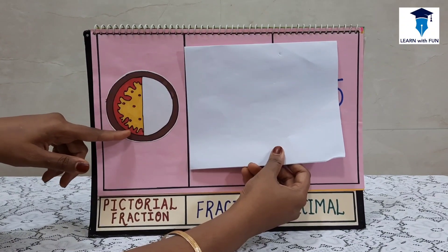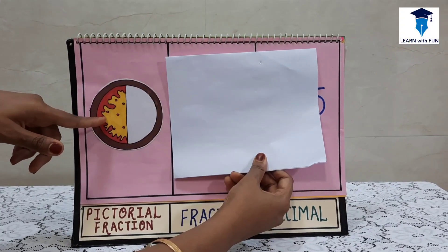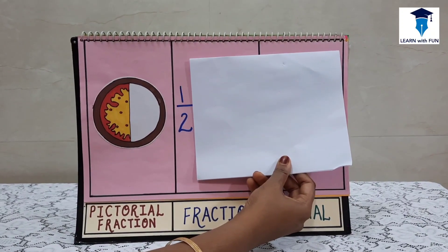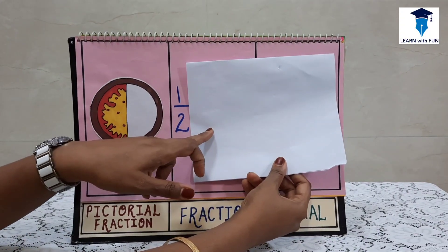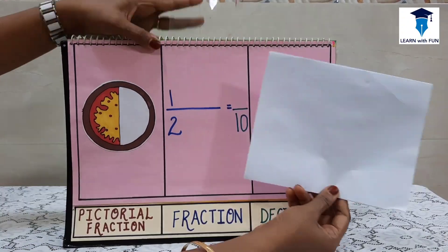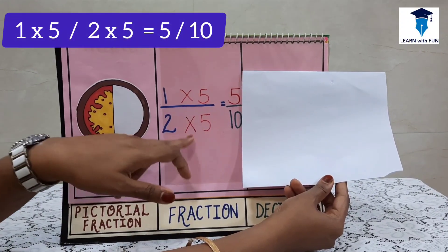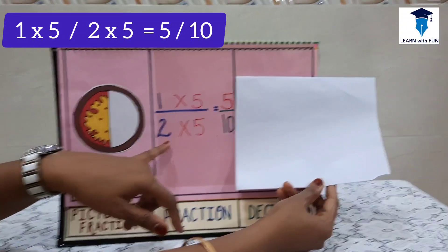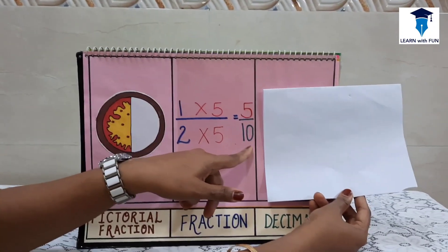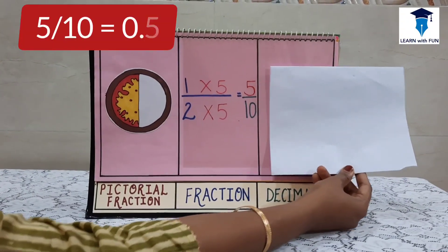But what to do if the fraction is not in multiples of 10? For example, there were 2 pieces of pizza, one piece is eaten and one is left. The child writes 1 upon 2. To convert it to decimal, the denominator must be a multiple of 10. So we multiply 2 by 5 to get 10, and by the mathematical rule we multiply the numerator by 5 also: 1 × 5 = 5. So 1 upon 2 and 5 upon 10 are equivalent fractions. Since the denominator is now 10, we can convert: 5 upon 10 = 0.5.